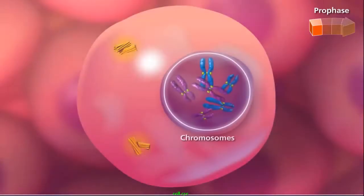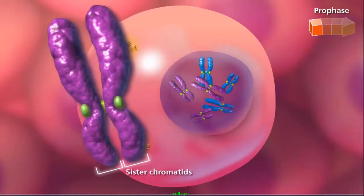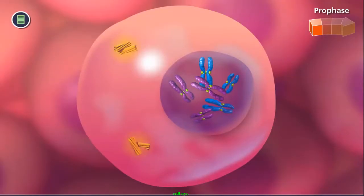During prophase, the chromosomes condense and become visible, appearing as two sister chromatids held together at the centromere. The cytoskeleton disassembles as the spindle begins to form.